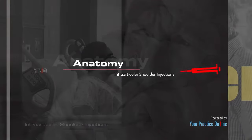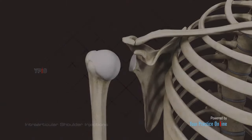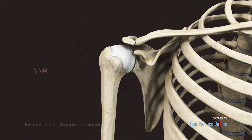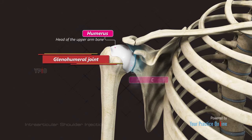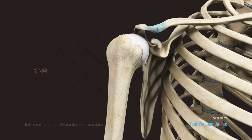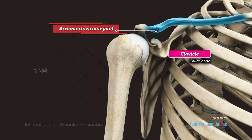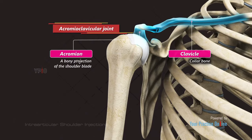The shoulder consists of two joints. The main joint is the glenohumeral joint, formed by the head of the upper arm bone or humerus and the glenoid cavity at the side of the shoulder blade. The acromioclavicular joint of the shoulder is formed by the clavicle or collarbone and the acromion, a bony projection of the shoulder blade.